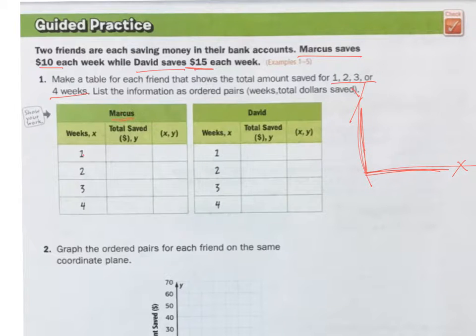For one week, this is Marcus, he's going to do $10. Two weeks, he's going to do $20. Three weeks, it's going to be $30. And four weeks, it's going to be $40. So my XY is 1,10. This one is 2,20. This one is 3,30. And this is 4,40. You just take the X here and the Y here, and you put it into this.